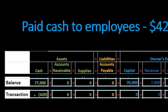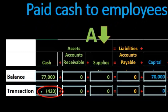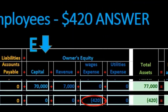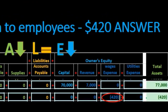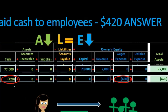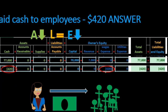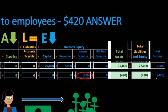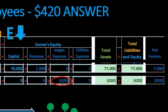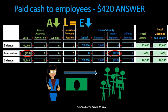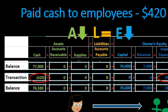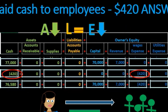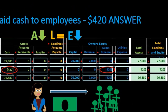Recording the transaction: cash decreases by $420, decreasing total assets. Equity decreases with the expense pulling down total equity. Total assets equal total liabilities plus equity — the $420 decrease in cash matches the $420 decrease in equity due to wages expense. Net income is affected: for this transaction we have a loss of $420 as expenses go up.